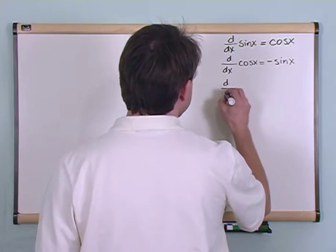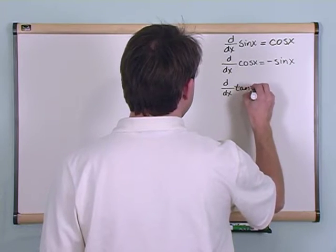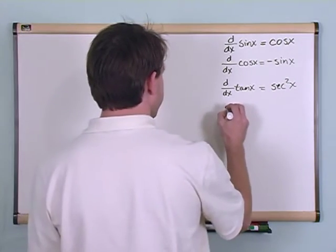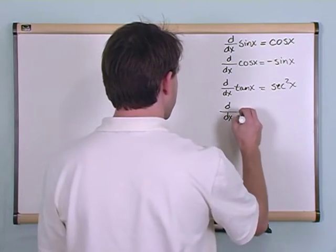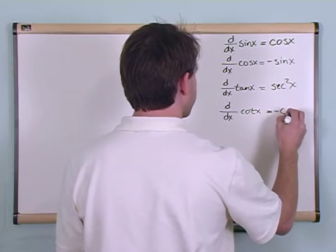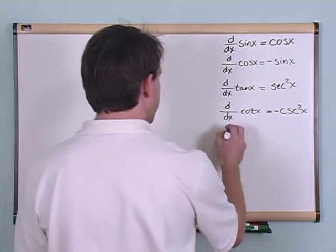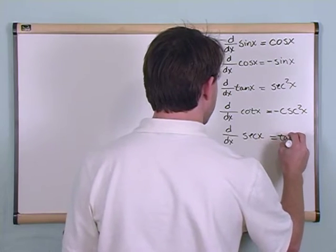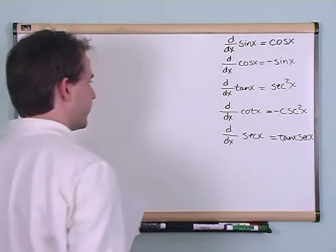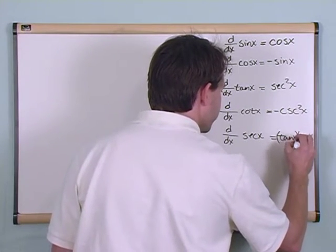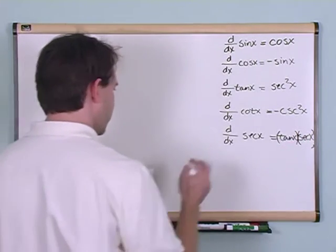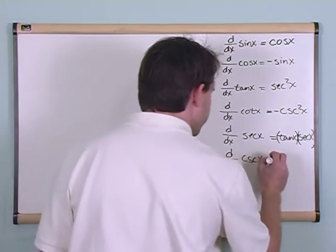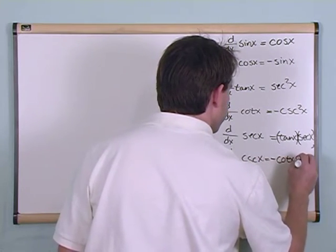The derivative with respect to x of tangent x is just equal to secant squared. Okay? And the derivative with respect to x of cotangent is equal to negative cosecant squared. And the derivative of secant is equal to tangent x times the secant of x, tangent times secant, of x. And then finally the derivative of cosecant is equal to negative cotangent cosecant. Okay?